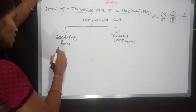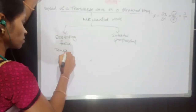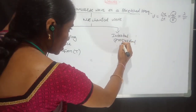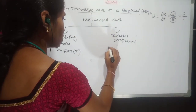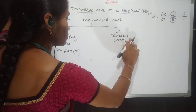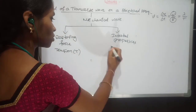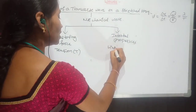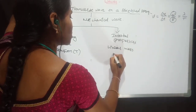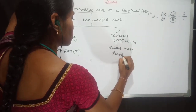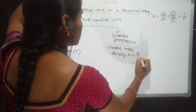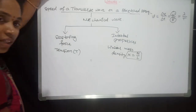The restoring force in a string is the tension. And coming to the inertial properties for a stretched string, the inertial property is the linear mass density, which is denoted with μ and is equal to mass per length — mass of the string per length of the string.